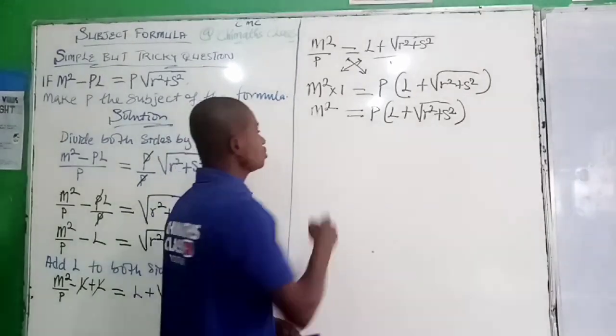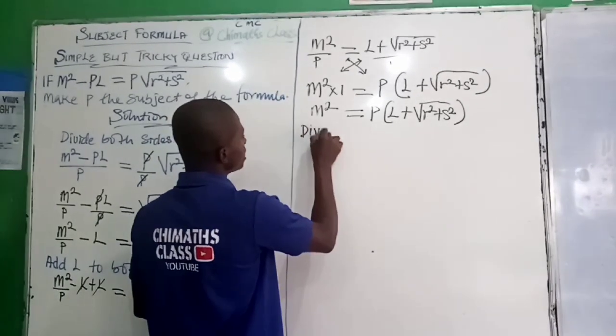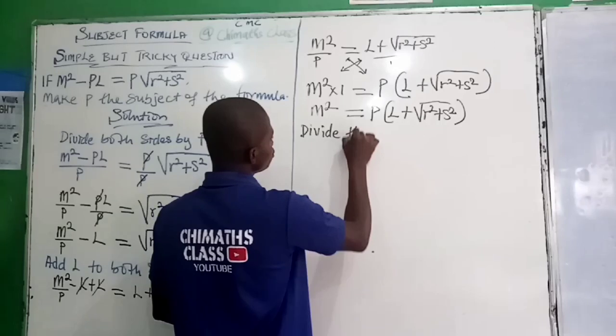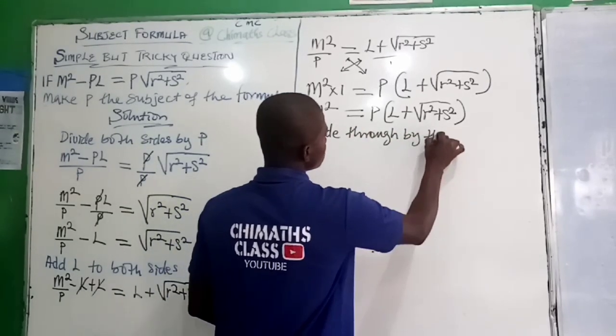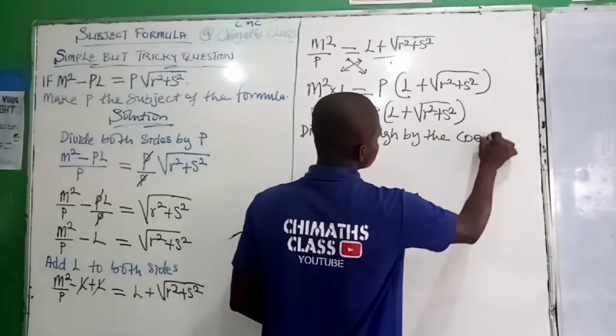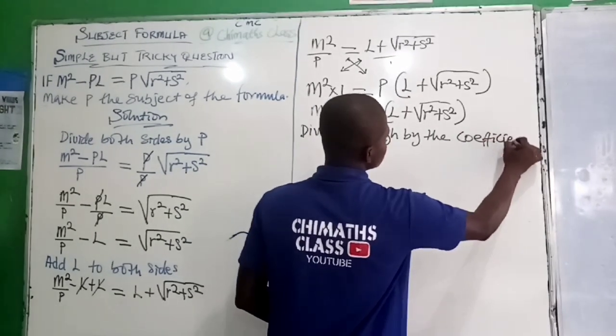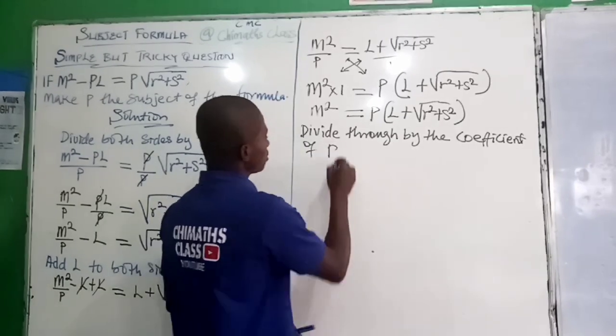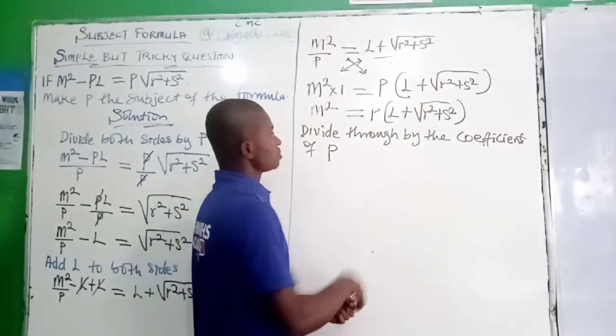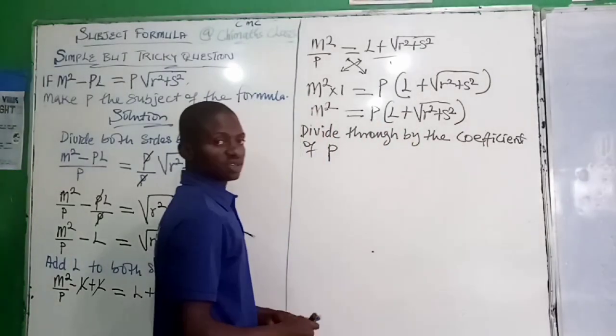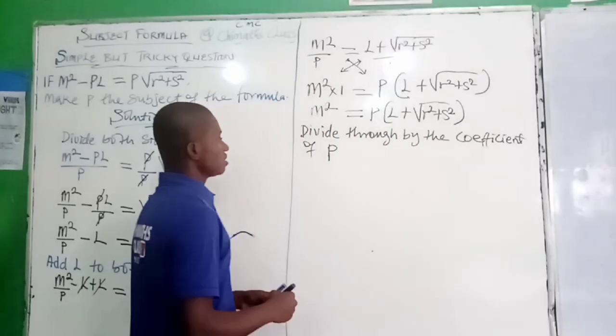But it's P we want to make the subject of the formula. Therefore, we're going to divide through by the coefficients. Divide through by the coefficient of P. Coefficient is just the number multiplying a variable.